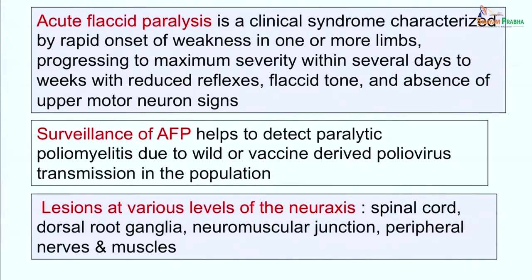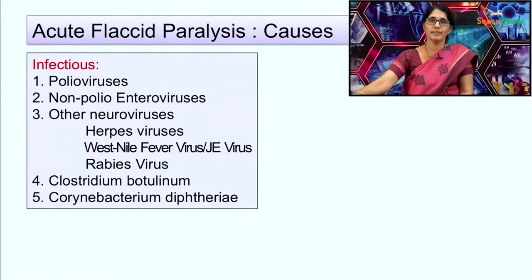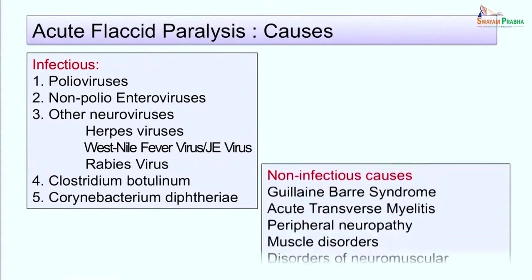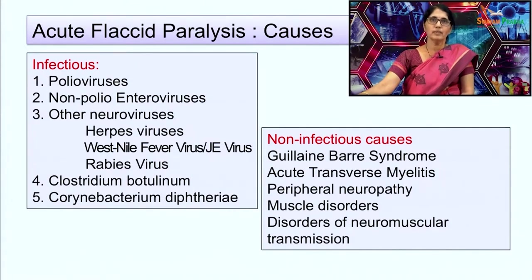There may also be involvement of peripheral nerves, as seen in Guillain-Barré syndrome, polymyositis, and viral myositis. The most important infectious causes include polioviruses, non-polio enteroviruses, other neuro-viruses like herpes viruses, West Nile virus, Japanese encephalitis virus, rabies virus, and bacterial infections by Clostridium botulinum and Corynebacterium diphtheriae. The non-infectious causes include Guillain-Barré syndrome, acute transverse myelitis, peripheral neuropathy, muscle disorders, and disorders of neuromuscular transmission.